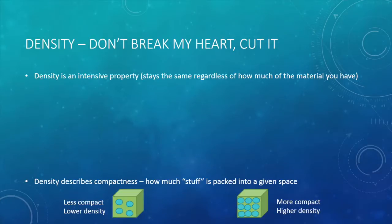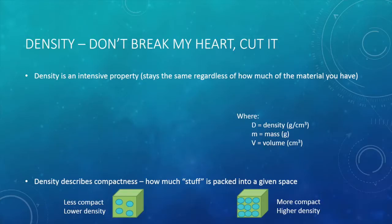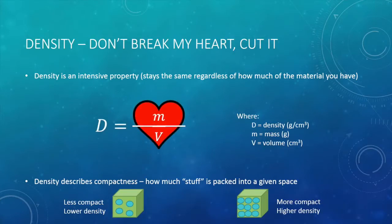Knowing this, how do you think we would write the formula for density? What properties define an object's density? We noticed that density depends on how much stuff, or mass, is contained in a given space, or volume, so density must depend on mass and volume. We write density equals mass over volume, or m over v. This relationship is easy to remember if we know the units, or if we remember that density doesn't break my heart — it cuts it. The top half of the heart forms an m, and the bottom half forms the v. To learn more about density and its applications, continue to the float or sink density lesson.